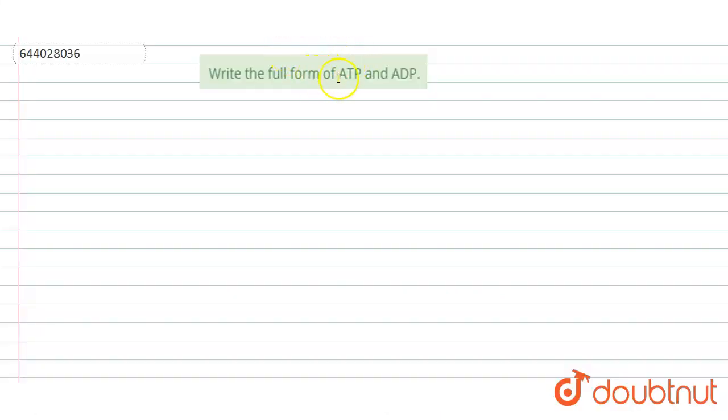The question is: write the full form of ATP and ADP. Here we will see ATP and ADP. Both are energy-rich molecules, but ATP is the higher energy-rich molecule.